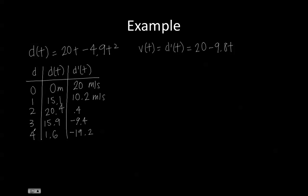So at 4 seconds, the displacement off the ground was decreasing by negative 19.2 meters per second. So it was getting closer to the ground.